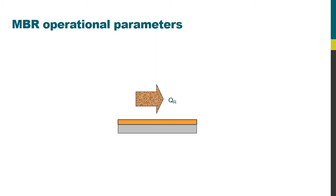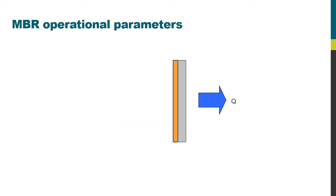And it's the shear which actually produces the flux. But you can also generate shear by using a flow of air if the membrane is oriented vertically. And that's exactly what happens for an immersed membrane bioreactor.